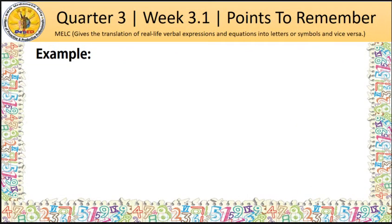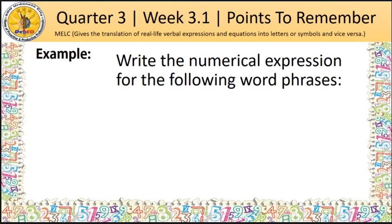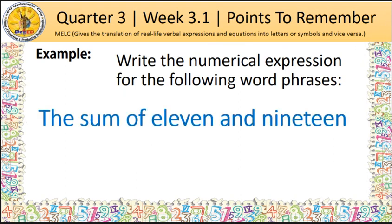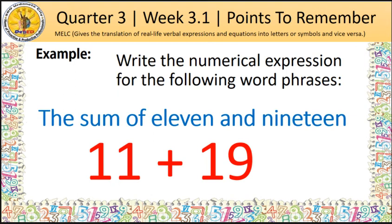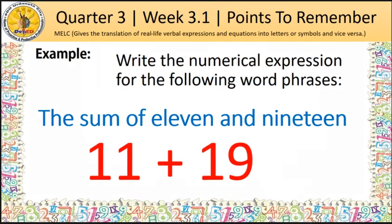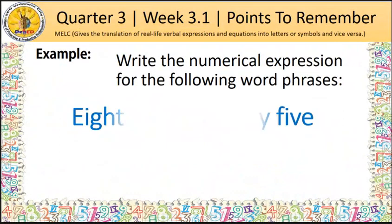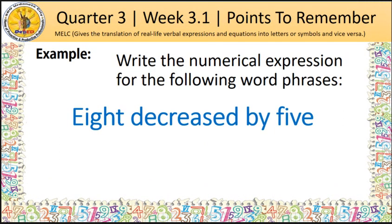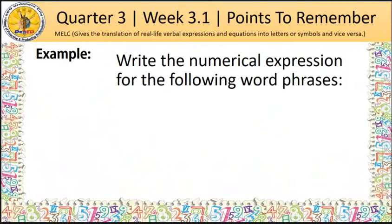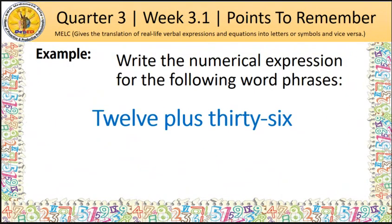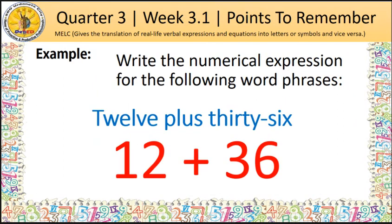Let's have an example. Write the numerical expression for the following word phrases. The sum of 11 and 19 — sum means addition, so we have 11 + 19. Eight decreased by 5 — decrease is a word clue for subtraction. 12 plus 36 — so we have 12 + 36.